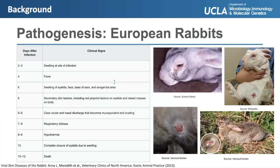Here's a quick chart showing myxomatosis — the official name of the disease — and how it progresses in most European rabbits. There is swelling of the site of infection, then other sites start to swell like the face and the anogenital region, then lesions appear across the body, followed by ocular and nasal discharge, and eventually death. It turns out that pathogenesis is actually quite different in some European rabbits, since there are multiple strains of myxoma virus.